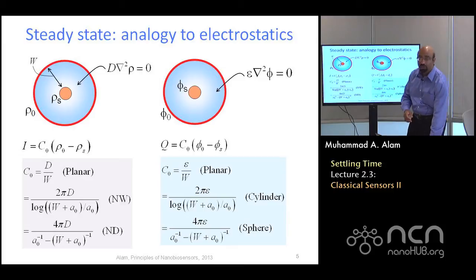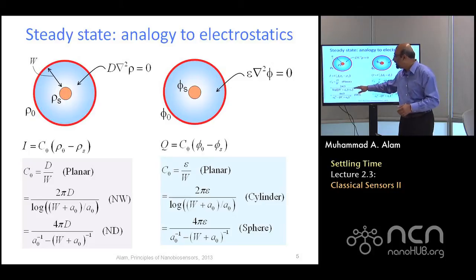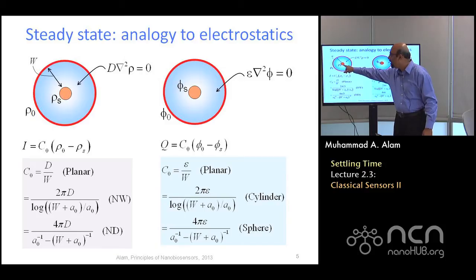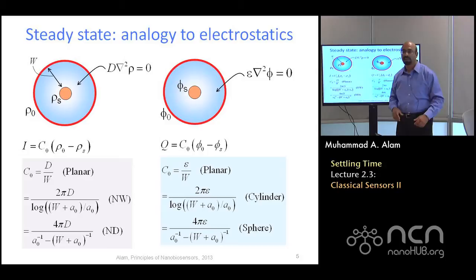In that case, if you had two nanowires, one sort of sinking in carriers, molecules from the other one, or two nanospheres, right? In that case, the results are immediately given. You can find out what the steady state flux of molecules are from this surface to the sensor surface.